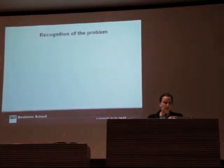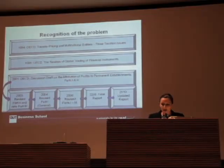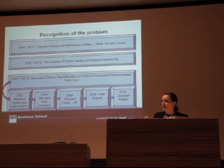So is there really a problem in relation to the arm's length approach to financial institutions? The OECD has recognised that there are problems. They first recognised the problem in 1984 in a report called Transfer Pricing on Multinational Entities: Three Taxation Issues — taxation of multinational banks was issue number two. Recognised again in 1998 in the Taxation of Global Trading of Financial Instruments. Then it ended up in our current 2010 report on the Attribution of Profits to Permanent Establishments, in which part one deals with what started as the working hypothesis in relation to applying the arm's length standard to permanent establishments or branches, which then changed into what is known as the Authorised OECD Approach.